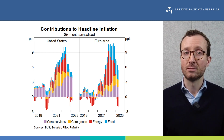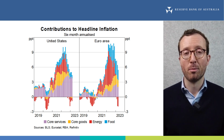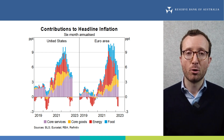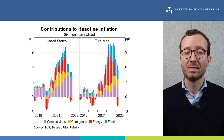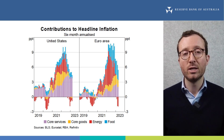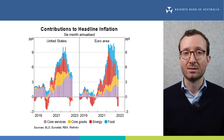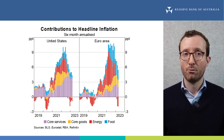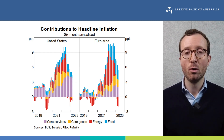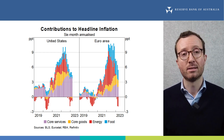But core services price inflation in the purple bars remains strong and progress in lowering it has slowed. This is due to the ongoing recovery in spending on services, high wages growth and strong housing services inflation. Food price inflation in blue also remains high.